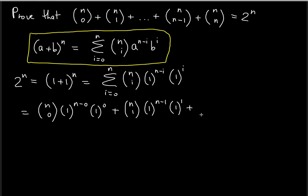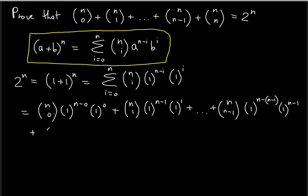This continues until the very last two terms. The second-to-last term will be n choose n minus 1, times 1 to the n minus (n minus 1), times 1 to the n minus 1. And then the last term is n choose n — that's when i reaches n — times 1 to the n minus n, times 1 raised to the n.